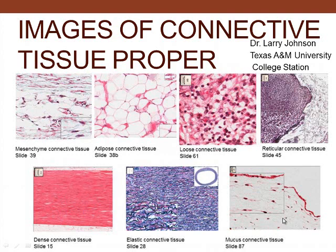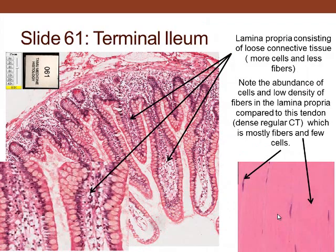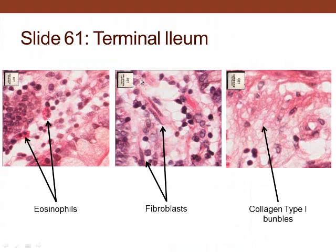Mucous connective tissue is different from other connective tissue and is found in the umbilical cord. Loose connective tissue means lots of cells and fewer fibers, in contrast to dense regular connective tissue like a tendon, which has few cells but many fibers. The important thing in connective tissue is the extracellular component — the fibers laid down by cells and their secretions, such as collagen.